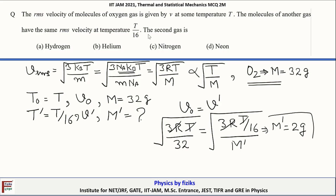A molar mass of 2 grams corresponds to hydrogen, since hydrogen has 1 proton and 1 neutron, giving a molecular mass of 2 grams per mole. Therefore the correct option is A.